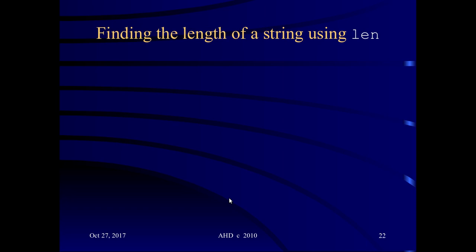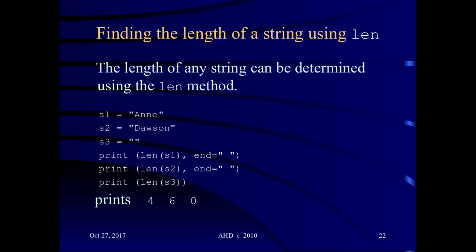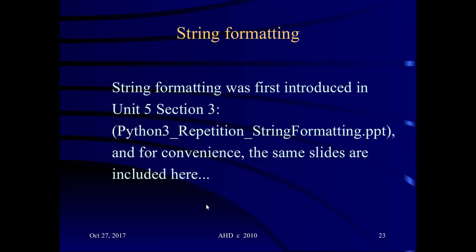You can find the length of a string using the len() built-in function, just as you can with a list. The length of string 1 is 4, the length of string 2 is 6, and the length of string 3 — an empty string with nothing between the quote marks — is 0. When printing, ending with a space instead of a new line means all three lengths print on the same line. This is program 08-07.